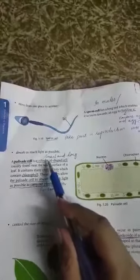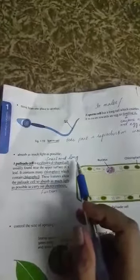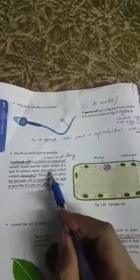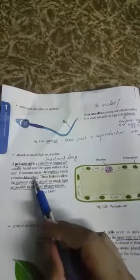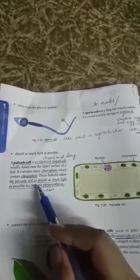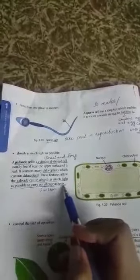Next is the palisade cell. Palisade cells are cylindrical in shape - cylindrical means cells that are small and long in size. They contain the green pigment called chloroplast, which contains chlorophyll. Chlorophyll is a pigment that helps the plant to absorb as much light as possible to carry out photosynthesis. Palisade cells actually take part in photosynthesis.